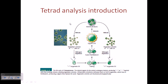Before understanding tetrad analyses, what we know is that for diploid cells or diploid systems — that means a 2N system — there is a way of determining the linkage distance between two genes using crossing over, a two-point or three-point cross. But in case of haploid organisms, like alpha cells and A cells and so many other different types of haploid systems, if you want to find out the linkage between those genes, we require the tetrad analytic system to find that out.